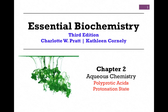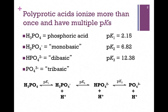In our next lesson on aqueous chemistry from Chapter 2, we want to look briefly at polyprotic acids and determining the protonation state. Polyprotic acids ionize more than once and have multiple pKa values. In other words, they are acids that have more than one proton to donate.